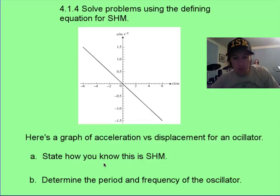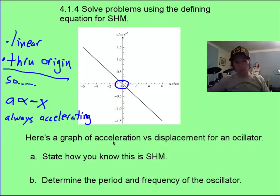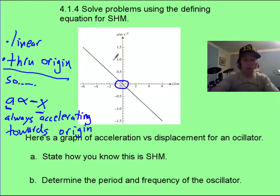Here's a short problem on simple harmonic motion. Pause it and see if you can solve parts A and B. We can answer part A based on what you just saw a few seconds ago, in that this is a linear situation going through the origin. Since it's both linear and through the origin, then acceleration must be proportional to the negative value of x. Or in other words, it's always accelerating towards the origin. When its displacement is positive, the acceleration is negative. And when the displacement is negative over here, the acceleration is positive.